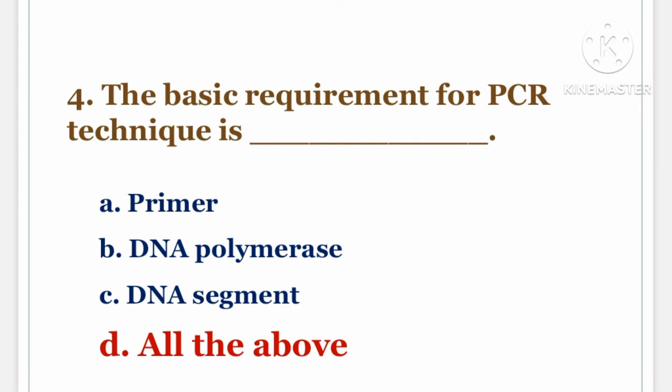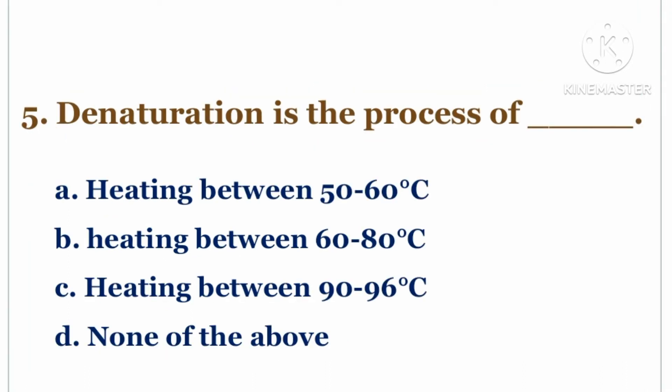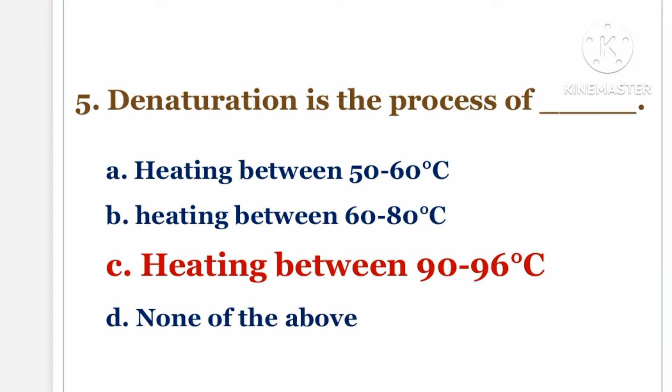Next question. Denaturation is the process of DASH. Options: A. Heating between 50 to 60 degree Celsius, B. Heating between 60 to 80 degree Celsius, C. Heating between 90 to 96 degree Celsius, D. None of the above. The answer is C. Heating between 90 to 96 degree Celsius.